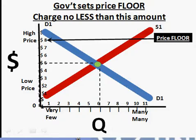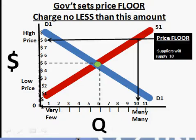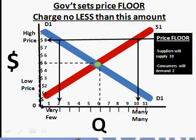What that means is that nobody is going to charge less than eight dollars a pound for coffee. The government goes a step further and says they will purchase any excess supply that the farmer is not able to sell. So what happens? At eight dollars a pound, suppliers want to supply ten million pounds of coffee, but consumers only want to buy two million pounds — not ten million, only two.